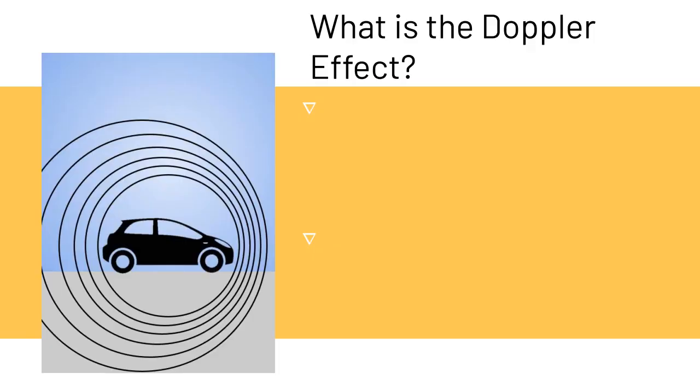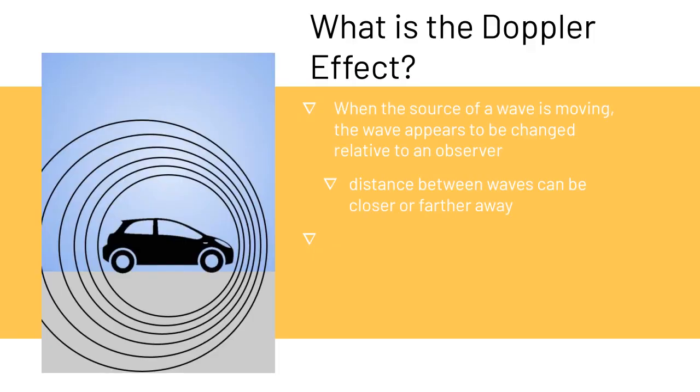So what is the Doppler Effect? When the source of a wave is moving, the wave appears to be changed relative to an observer. The distance between the waves can be closer or further away based on the observer.